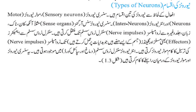نیورونز کی اقسام — types of neurons: افعال کے لحاظ سے نیورونز کی تین اقسام ہیں: sensory neurons، motor neurons اور inter neurons۔ Sensory neurons، sense organs مثلاً آنکھ، کان، ناک، زبان، جلد وغیرہ سے nerve impulses کو central nervous system تک منتقل کرتی ہیں۔ Motor neurons، central nervous system سے effectors یعنی muscles اور glands تک nerve impulses کی ترسیل کا کام کرتی ہیں۔ Inter neurons، central nervous system یعنی دماغ اور spinal cord میں موجود ہوتی ہیں اور sensory neurons اور motor neurons کے درمیان رابطے کا کام کرتی ہیں۔